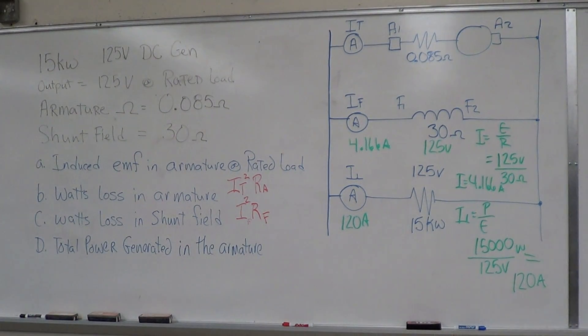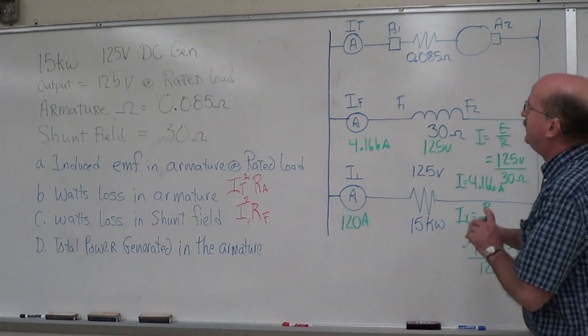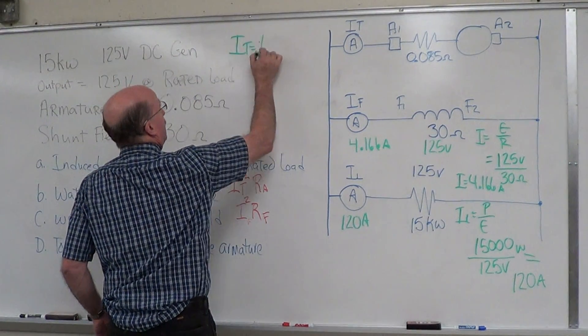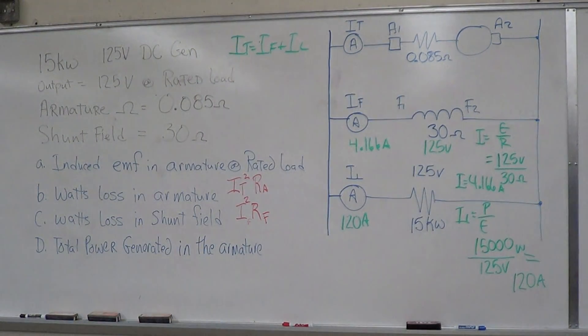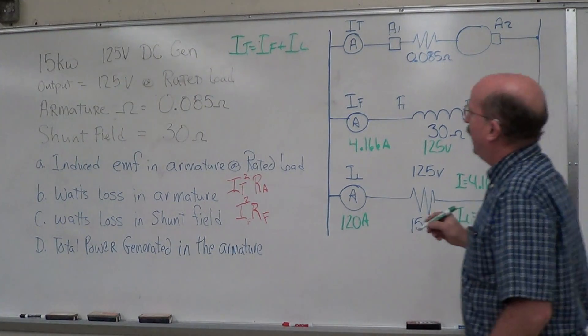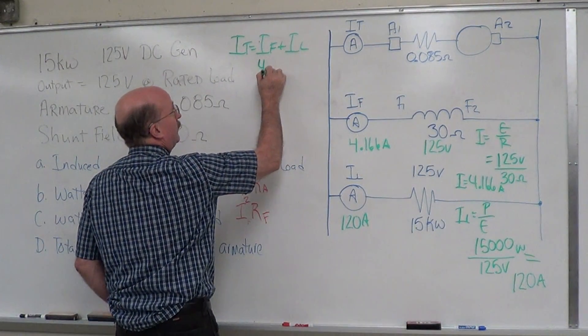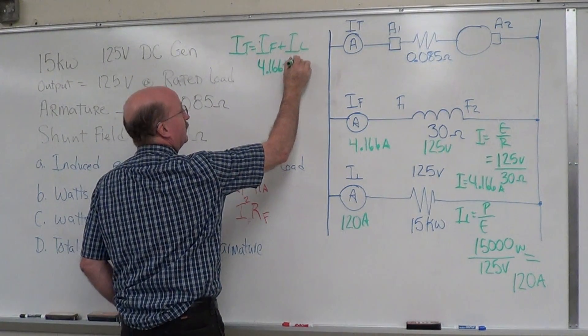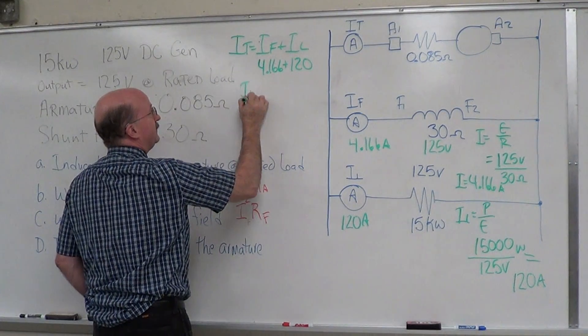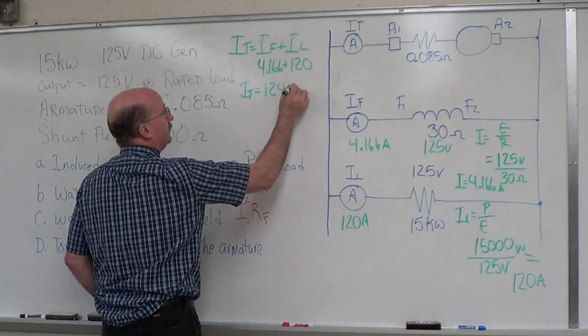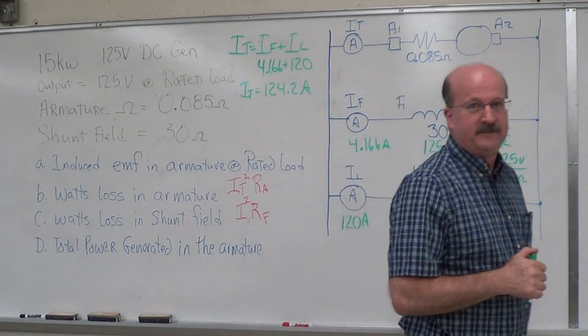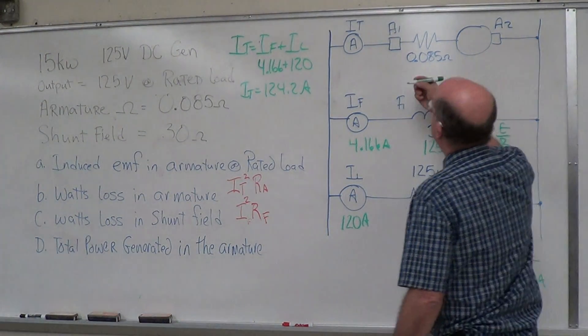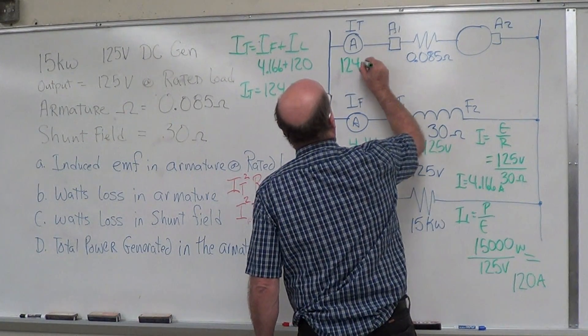Now IT, what is IT? It's all coming from the armature, so IT equals IF plus IL. So IT equals 4.166 plus 120, which gives us 124.2 amps.